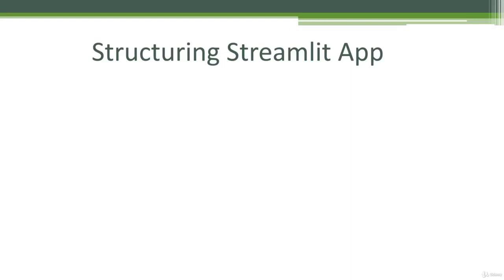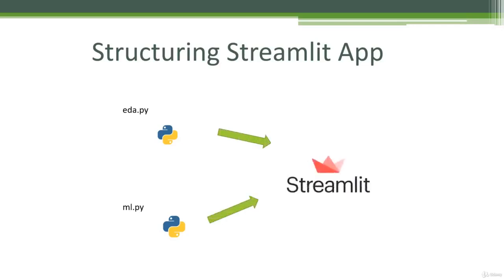In order to avoid that, we will have three different Python files. We will create two of them as eda.py and ml.py. The eda.py represents our exploratory data analysis part, and ml.py represents our prediction part. Both will be shared inside our Streamlit main app file named app.py.